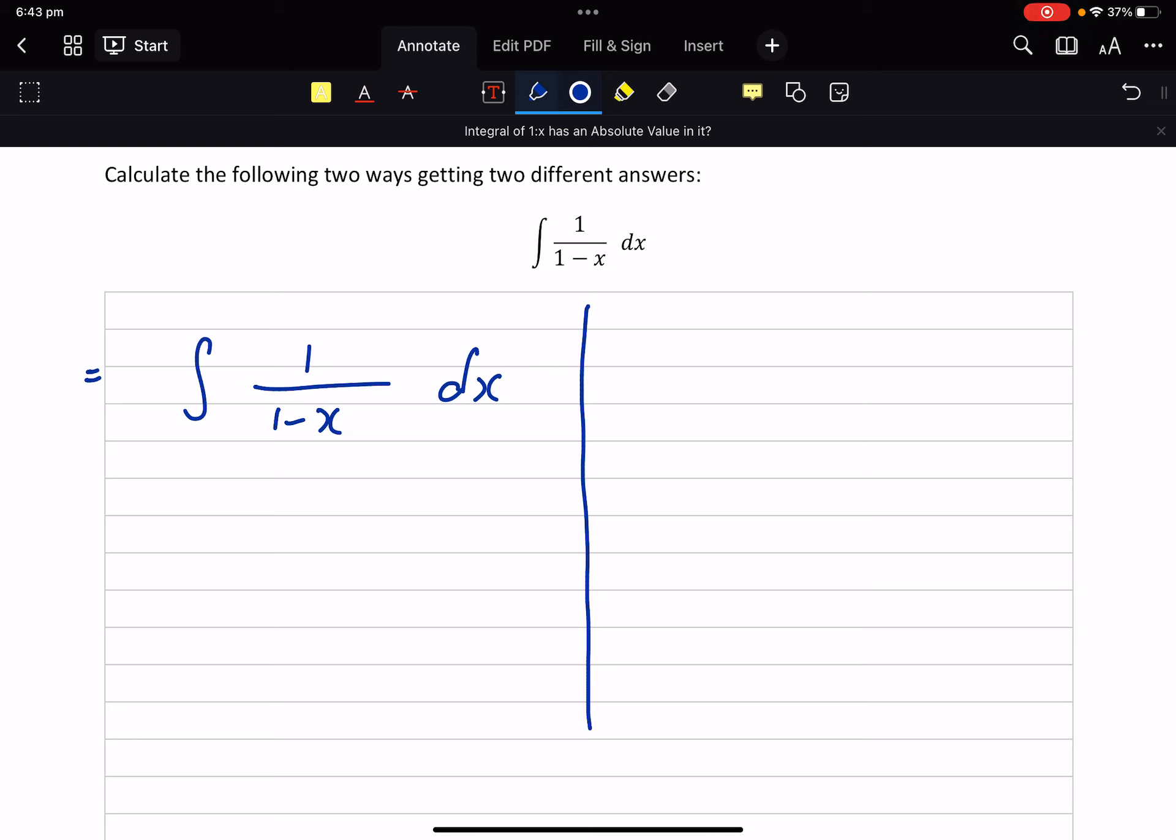So the derivative of the denominator is negative one. To get a negative one on the top I need to put two negatives, so I'm going to put a negative on the top and negative on the outside to counteract it.